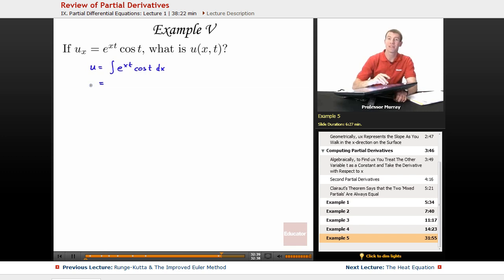And so that means that cosine of t is just a big constant, which means you can pull it out of the integral. So cosine of t, we're going to pull that out of the integral, e to the xt dx.